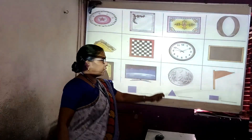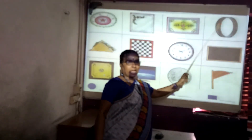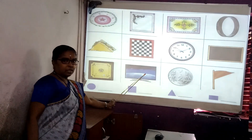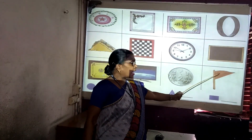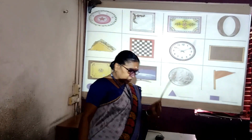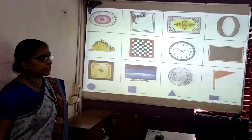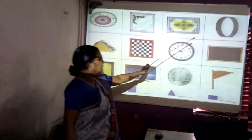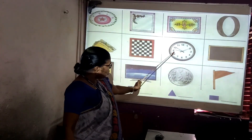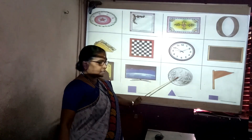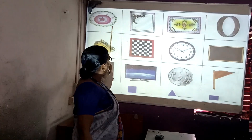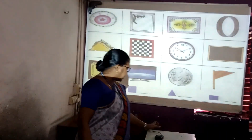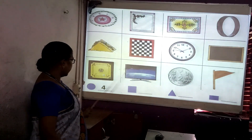Now let's count. How many circles are there? This is your circle — one. And two. And here the clock is your circle — three. And your coin is a circle — four. How many circles are there? One, two, three, four. Yes, four circles are there.